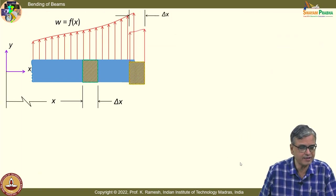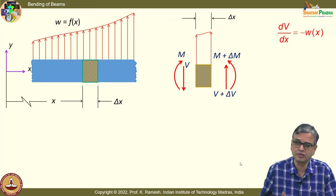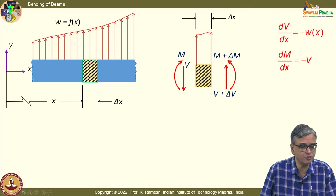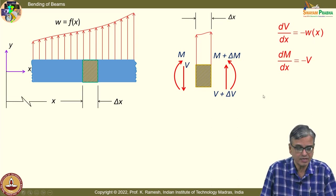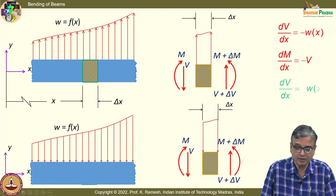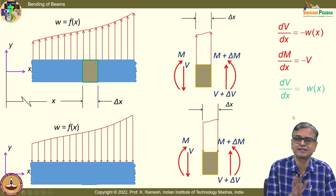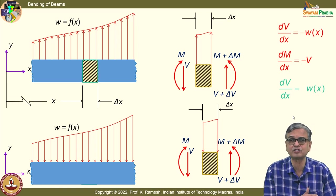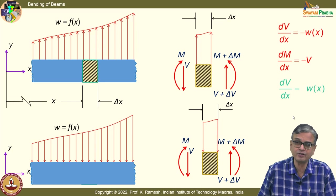Whenever a beam transmits a variable load or even uniform weight, there are multiple ways books present the expressions. If w acts upward taken as positive, you get dV/dx = −w(x) and dM/dx = −V. On the other hand, if you develop the equation with w acting downward, the only change is dV/dx = w(x) — it becomes positive. You also have to understand this subtle difference depending on the sign convention used.